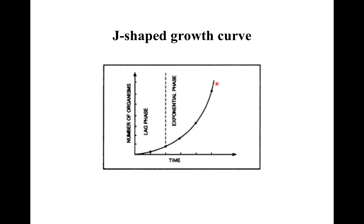After population growth has occurred in an almost unrestricted manner for some time, it leads to mass restoration and mortality due to a sudden burst of environmental resistance. This occurs due to a decrease in the availability of food and space. This sudden increase in mortality — the drastic reduction of population size — is known as population crash.